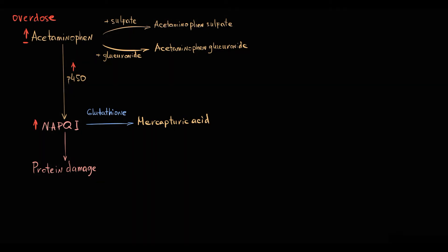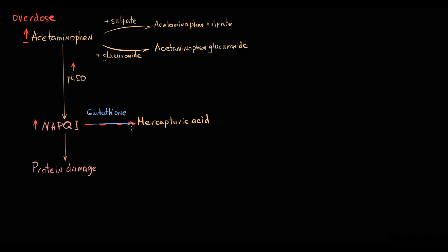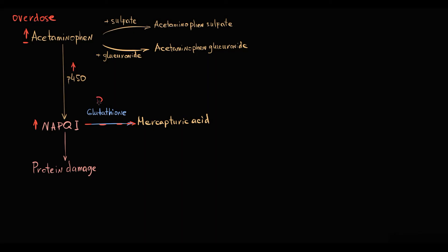Glutathione immediately conjugates with N-acetylbenzoquinonimine, thereby detoxifying it. But the more acetaminophen incoming to the liver tissue, the more depleted the glutathione stores become. At some point, glutathione stores become so depleted that there is no glutathione left to bind N-acetylbenzoquinonimine.